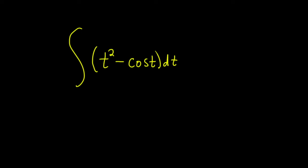In this problem, we're going to find the indefinite integral. We have t squared minus the cosine of t. For the t squared part, we can use the power rule. The power rule says when you have something to a power, as long as the power is not negative 1, all you do is look at the exponent and add 1 to it, then divide by the result.